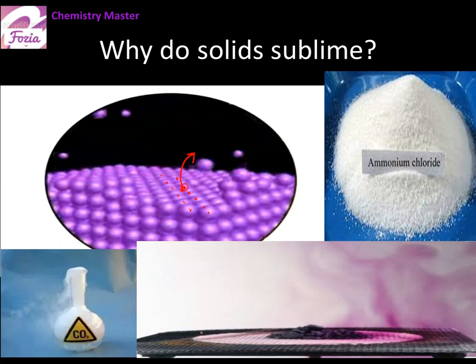Now let's look at the application of this topic. Dry ice is a very important industrial application. It is used for industrial refrigeration and transporting frozen foods such as ice cream and nuggets. We can freeze food products in a very cold environment, and dry ice changes directly to a gas without leaving any liquid behind, making it easy to carry and use.